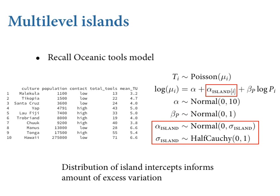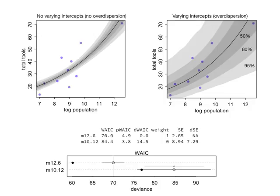The code to produce these counterfactual plots is in the book. In the upper left, the old model with just log population, no varying intercepts, shows no over-dispersion. The 50%, 80%, and 95% posterior intervals for the mean are shown around the black curve, and you can see a lot of dispersion in the actual data. On the upper right, counterfactual predictions marginalizing over the variation in sigma - the posterior estimate - show the model expects a lot more variation now because there's quite a lot of remaining variation after accounting for the log population effect. The varying intercepts pick that up and give you parameters describing how much of that variation there is.